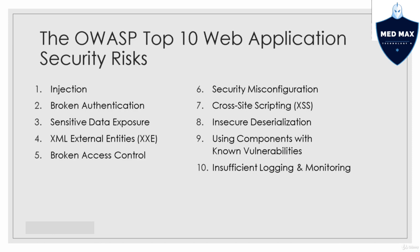Number 2 is broken authentication — are we able to try to gain access to the system because they're not able to authenticate us properly or as intended? Can we bypass authentication? Number 3 is sensitive data exposure. Does it accidentally open up certain directories that would actually allow hackers or users to browse into those directories, pulling out information or data?